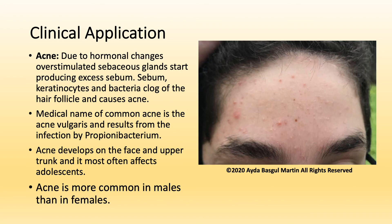Acne is due to hormonal changes — over-stimulated sebaceous glands start producing excessive sebum, and sebum, keratinocytes, and bacteria clog the hair follicle and cause acne. The medical name for common acne is acne vulgaris, and it results from infection by a bacteria called Propionibacterium. Acne develops on the face and upper trunk and most often affects adolescents. It is more common in males than in females.